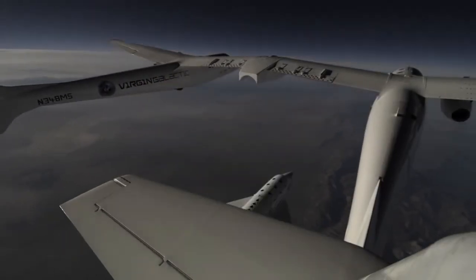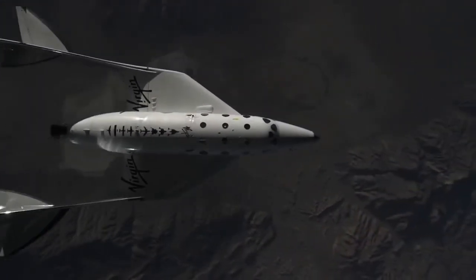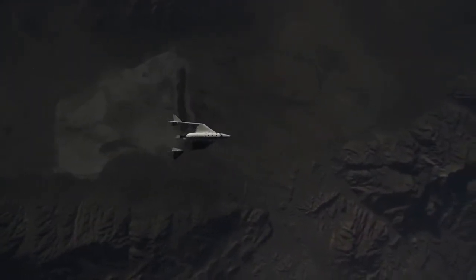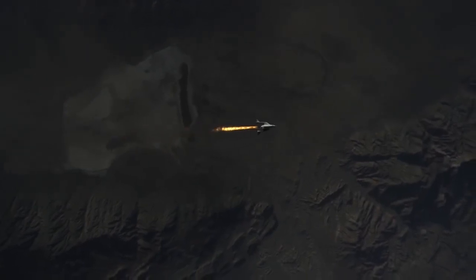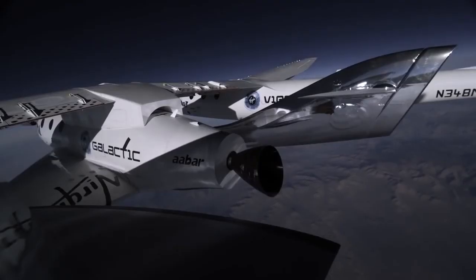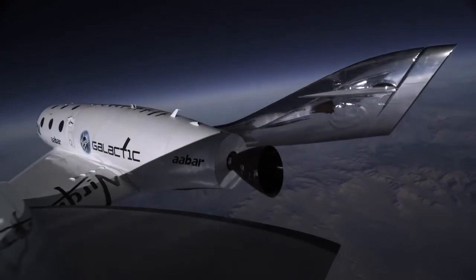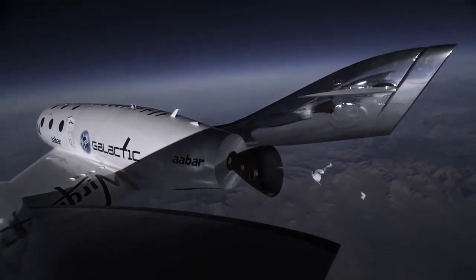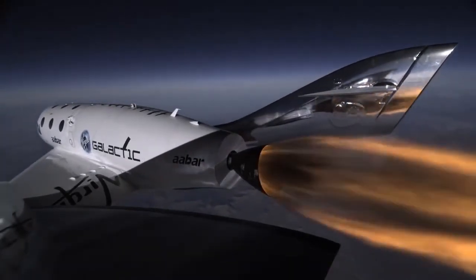An example of this would be Spaceship One and Spaceship Two from Virgin Galactic. They're using a hybrid rocket in that system. What's really interesting is the fuel in that case is basically rubber, and that's what they use for their fuel. But it's efficient, it's safe, and it gets you to space.